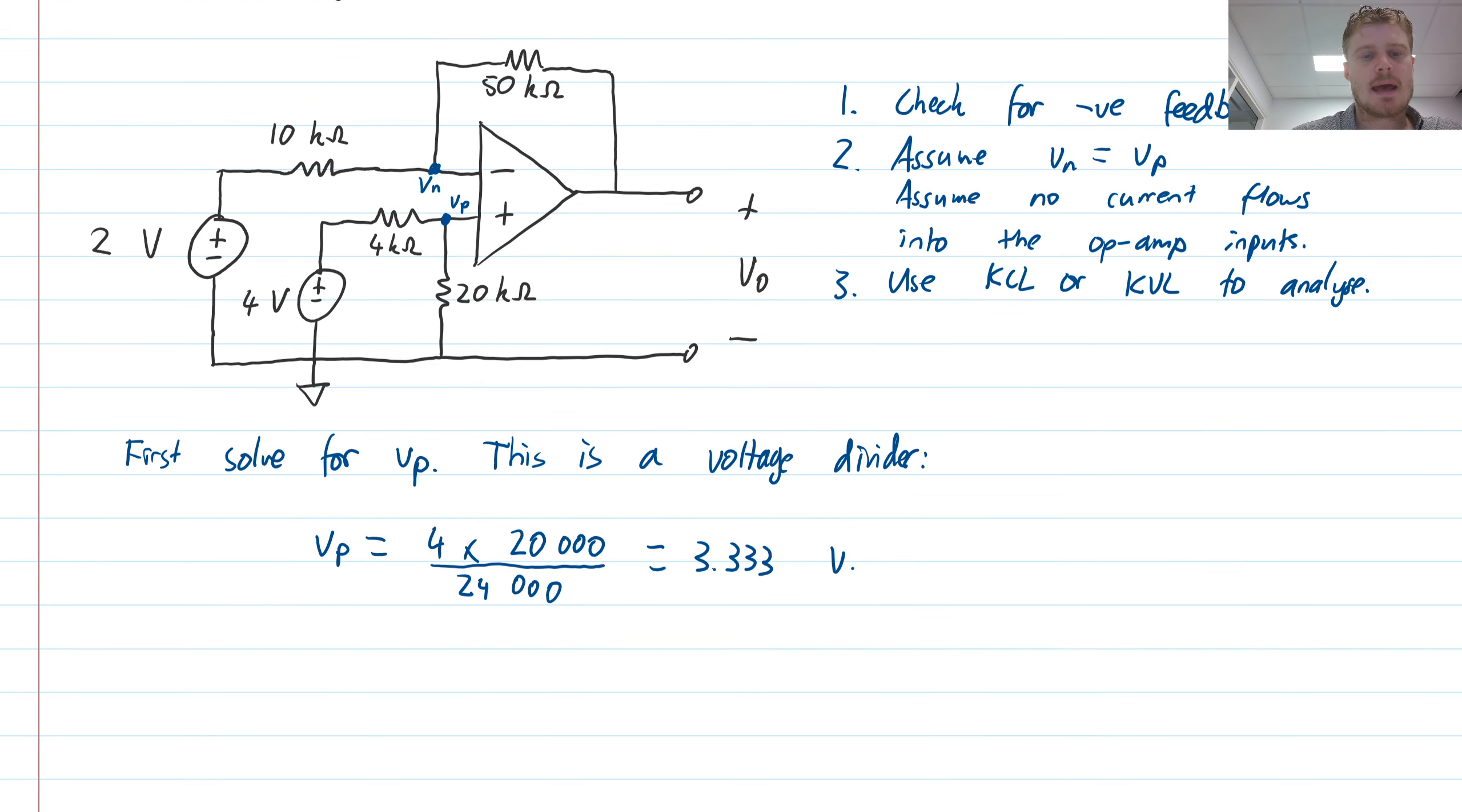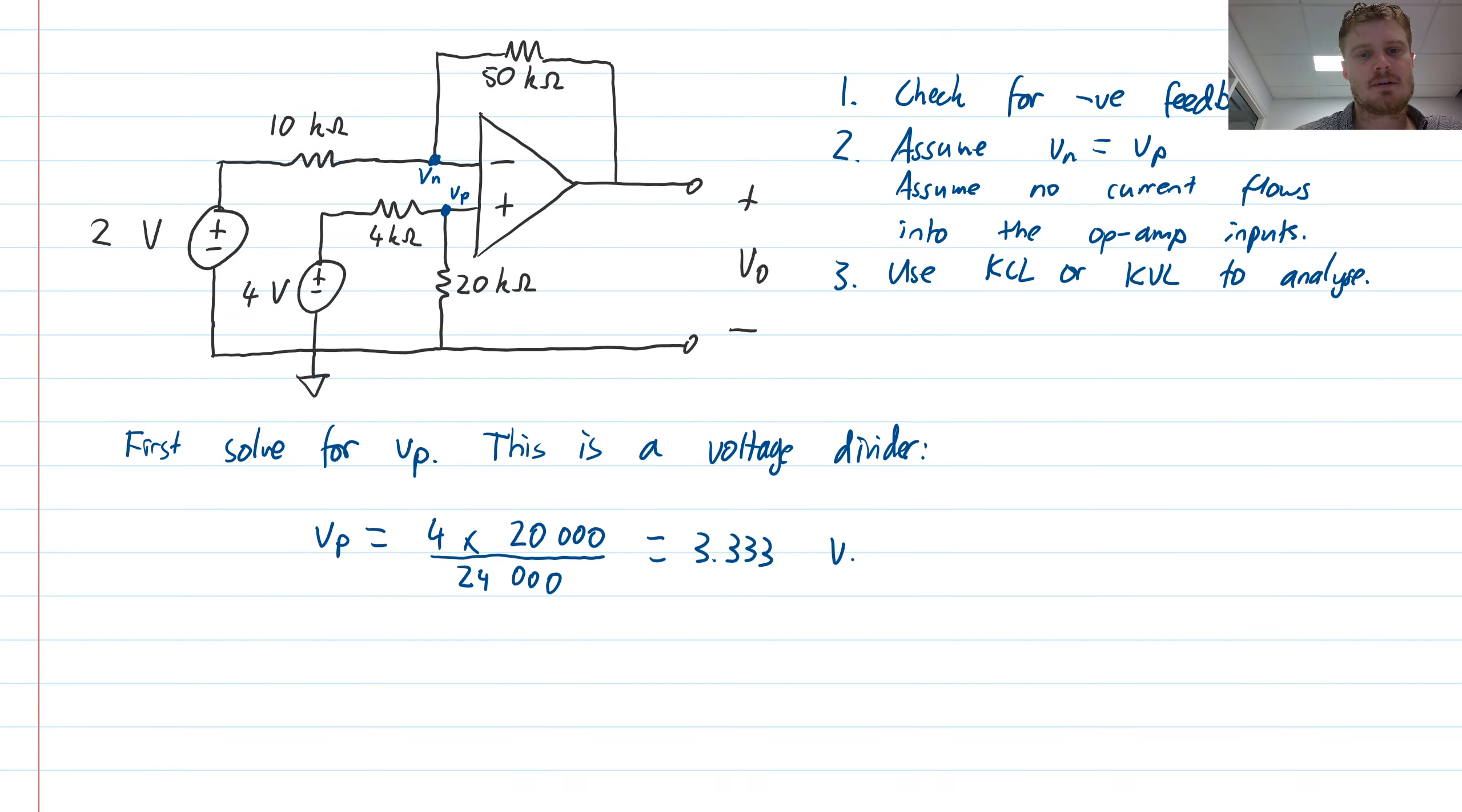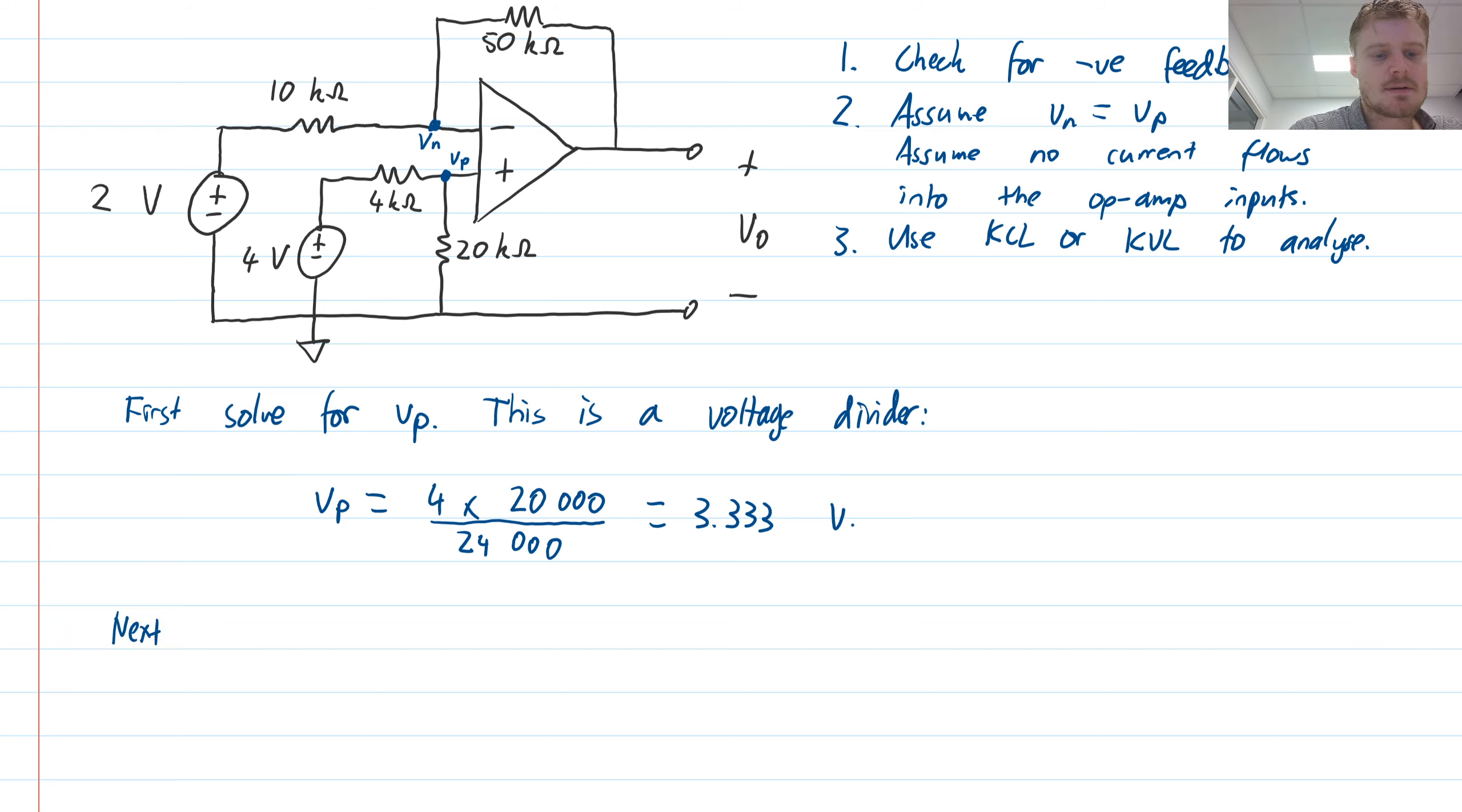Now we can analyze the other branch. That's this portion of our circuit. Given that we already know the voltage VN, we can just write KCL there and substitute in our known voltage. Next, apply KCL at node VN. In this case, the current leaving VN minus 2 volts divided by 10,000, that's the left branch. Current leaving on the right branch would be VN minus V out divided by 50,000. No current goes into the op-amp, so that equals 0.